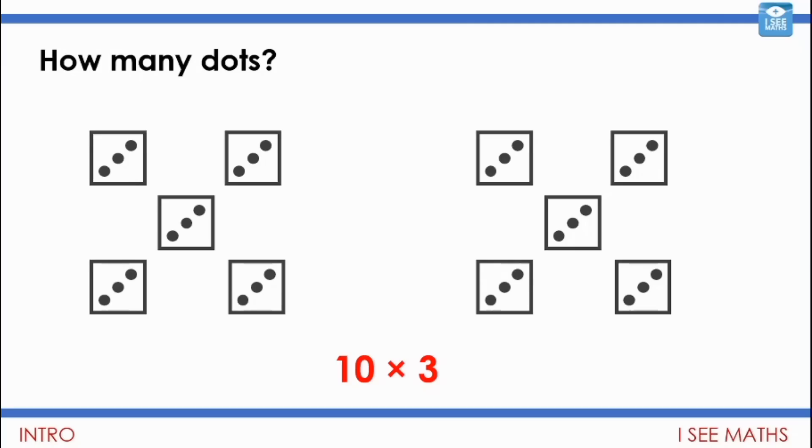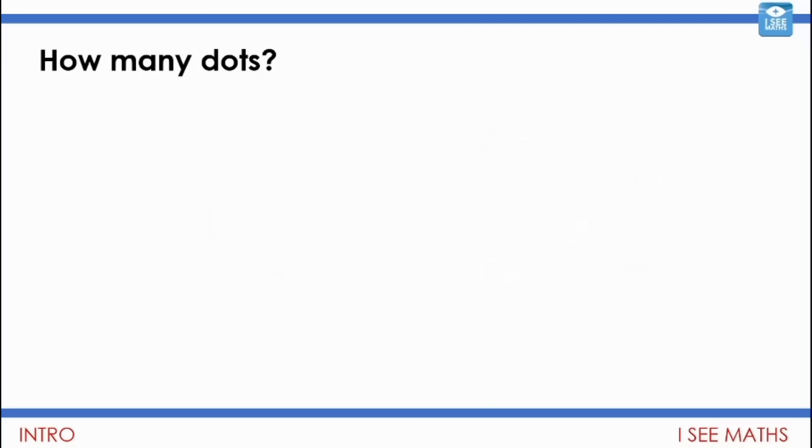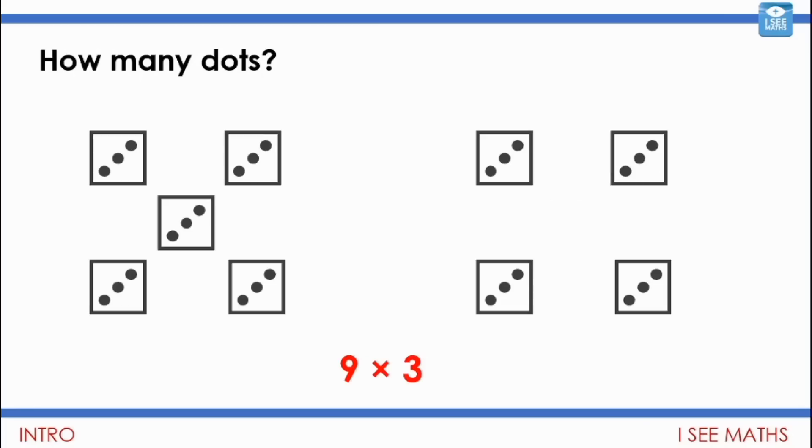How many dots? Hmm, what did you see this time? How is it linked to that first one? Pause the video if you need to, but how many dots were there? Well there were 9 lots of 3. It was 3 less than the one before. So there were 9 lots of 3 in total. And that is 27.